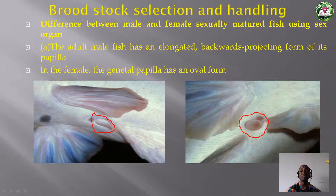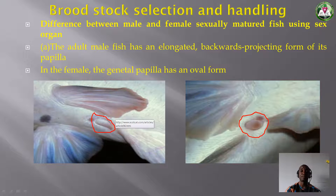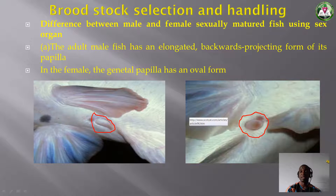If you don't know how to differentiate them, you may end up buying a female fish thinking you bought a male fish. The male catfish has a pointed, elongated genital papilla, while the female has a round, oval-form genital papilla.